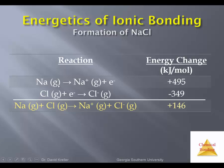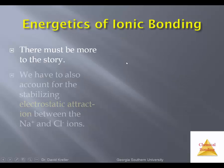First, we had to ionize sodium in the gas phase — that took energy. Then adding electrons to chlorine releases 349 kilojoules, so we put energy in and get some back. But overall, if we're just looking at the formation of ions in the gas phase from atoms in the gas phase, the ionization by itself doesn't account for why so much energy is released. This would require 146 kilojoules per mole — you're actually going uphill, investing energy. There must be more to this story.